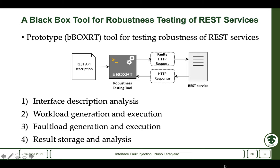The first step is the reading of the service interface, which is usually specified in an OpenAPI file. It holds things like the endpoints that can be invoked, the arguments necessary to invoke a certain operation, what the correct response for a certain operation is, and so on. The second step is the generation of a workload, which is essentially a valid set of requests that in principle should not trigger a failure of the service.